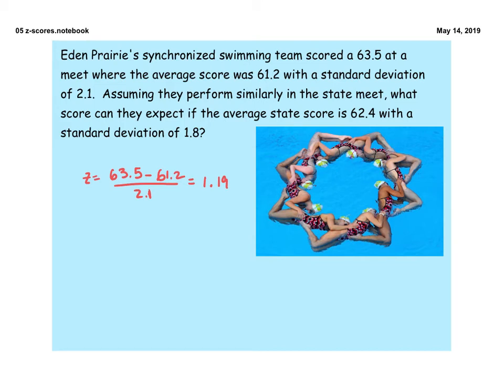Assuming that they perform similarly at the state meet, what score can they expect if the average score is 62.4 with a standard deviation of 1.8? So this sort of flips our problem so far. We've been calculating the z-score. Now we know the z-score. So 1.19 is the z-score they just had at this particular meet.